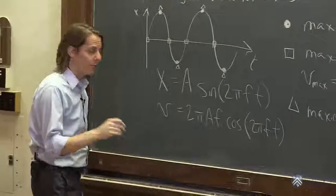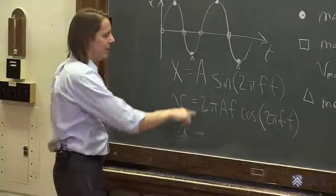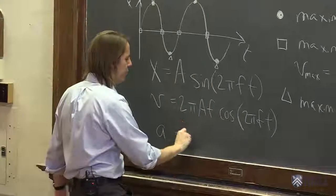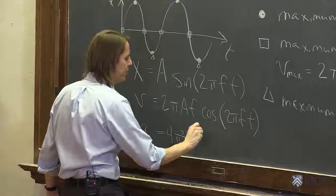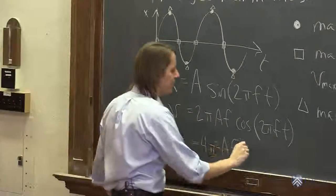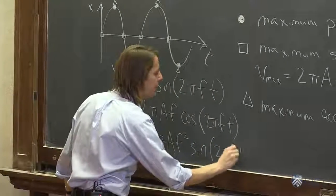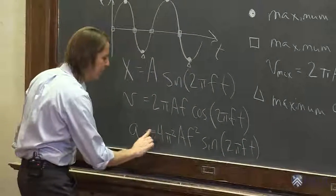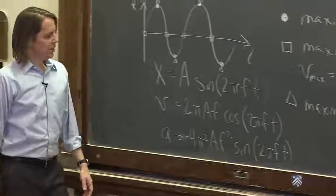And we could write a formula for the acceleration. If you know how to take derivatives, that's all we're doing here. And this is now a = -4π²Af², we pull out another frequency f, so we pulled it out twice. Cosine goes back to sine, 2πft. The derivative of cosine is negative sine.